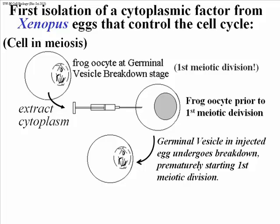The conclusion from this experiment is that the oocyte in the germinal vesicle breakdown stage must contain a diffusible chemical factor that is able to induce meiosis in an earlier oocyte. Because this hypothetical factor initiated egg maturation, it was called the meiosis promoting factor, or MPF.